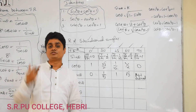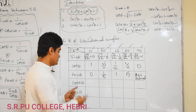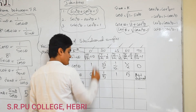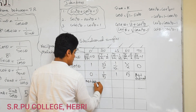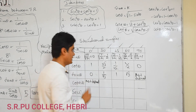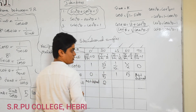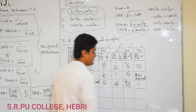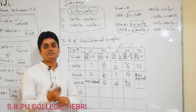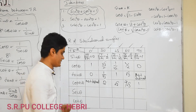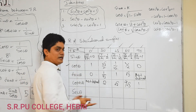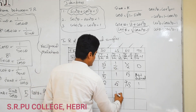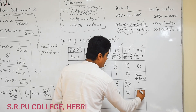Cosecant theta and sin theta are related in the reciprocal pattern. So the cosecant row is the reciprocal of the sin row: 1 by 0 is not defined, reciprocal of 1/2 is 2, reciprocal of 1/√2 is √2, reciprocal of √3/2 is 2/√3, and reciprocal of 1 is 1. For secant theta, it is related to cos theta in the reciprocal pattern. So the secant row — referring to the cos row — is: 1, 2/√3, √2, not defined.